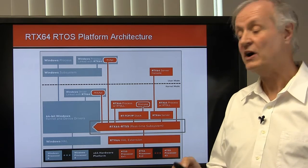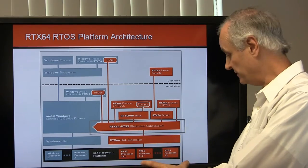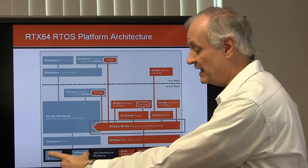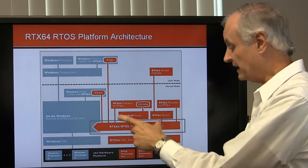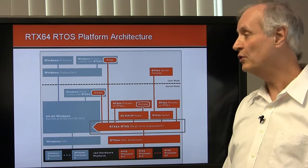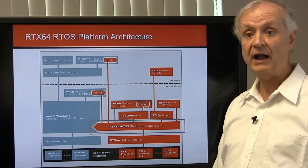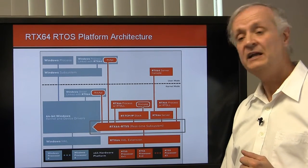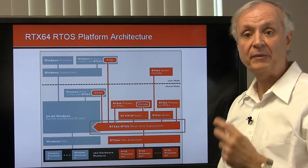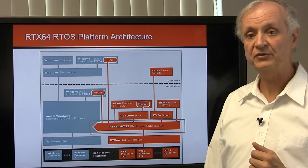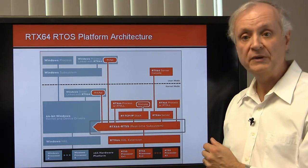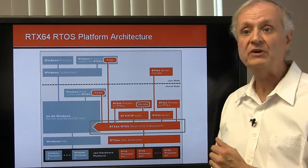Threads are scheduled across the allocated RTX cores based on each processor — Windows assigned to its processors and RTX assigned to theirs. Floating point operations are supported with no additional setup during compile and linking. Structured exception handling within the RTX 64 application behaves similarly to Windows.